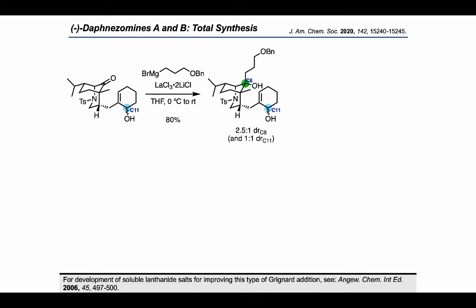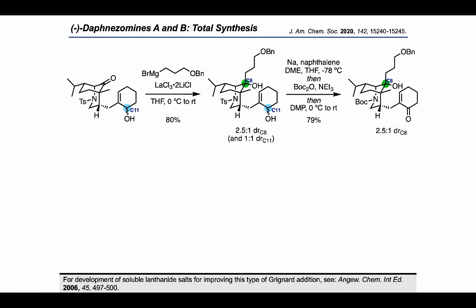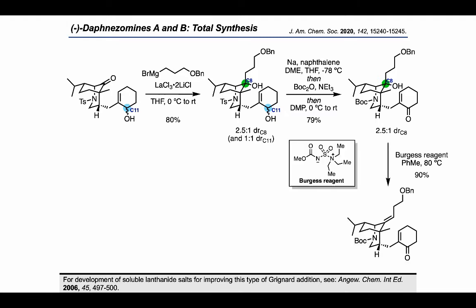The authors proceeded by treating their ketone-containing intermediate with a Grignard reagent in the presence of lanthanum chloride, which delivered a diastereomeric mixture of products. However, it's worth noting that both of the stereocenters at C8 and C11 are inconsequential. The authors then did a protecting group swap, first removing the tosyl group with sodium naphthalenide and re-protecting with Boc₂O. Afterwards, they treated with DMP to convert the allylic alcohol to an enone, erasing stereochemistry at C11, then Burgess reagent to obtain the dehydrated intermediate, erasing the stereochemistry at C8 as well.